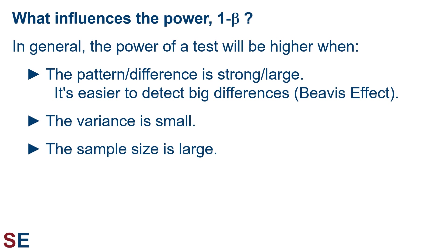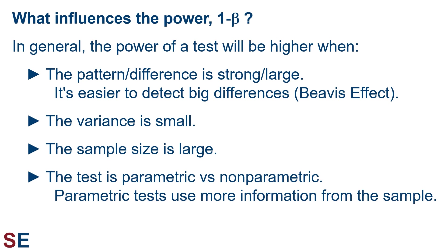Larger sample sizes reduce sampling error. Finally, the power of a statistical test is higher when it's a parametric test as opposed to a non-parametric test. Parametric tests use more of the information from the sample but are more prone to violations of their mathematical assumptions. Non-parametric tests are more robust to unusual data distributions but gain that robustness at the expense of discarding some of the information in the sample.